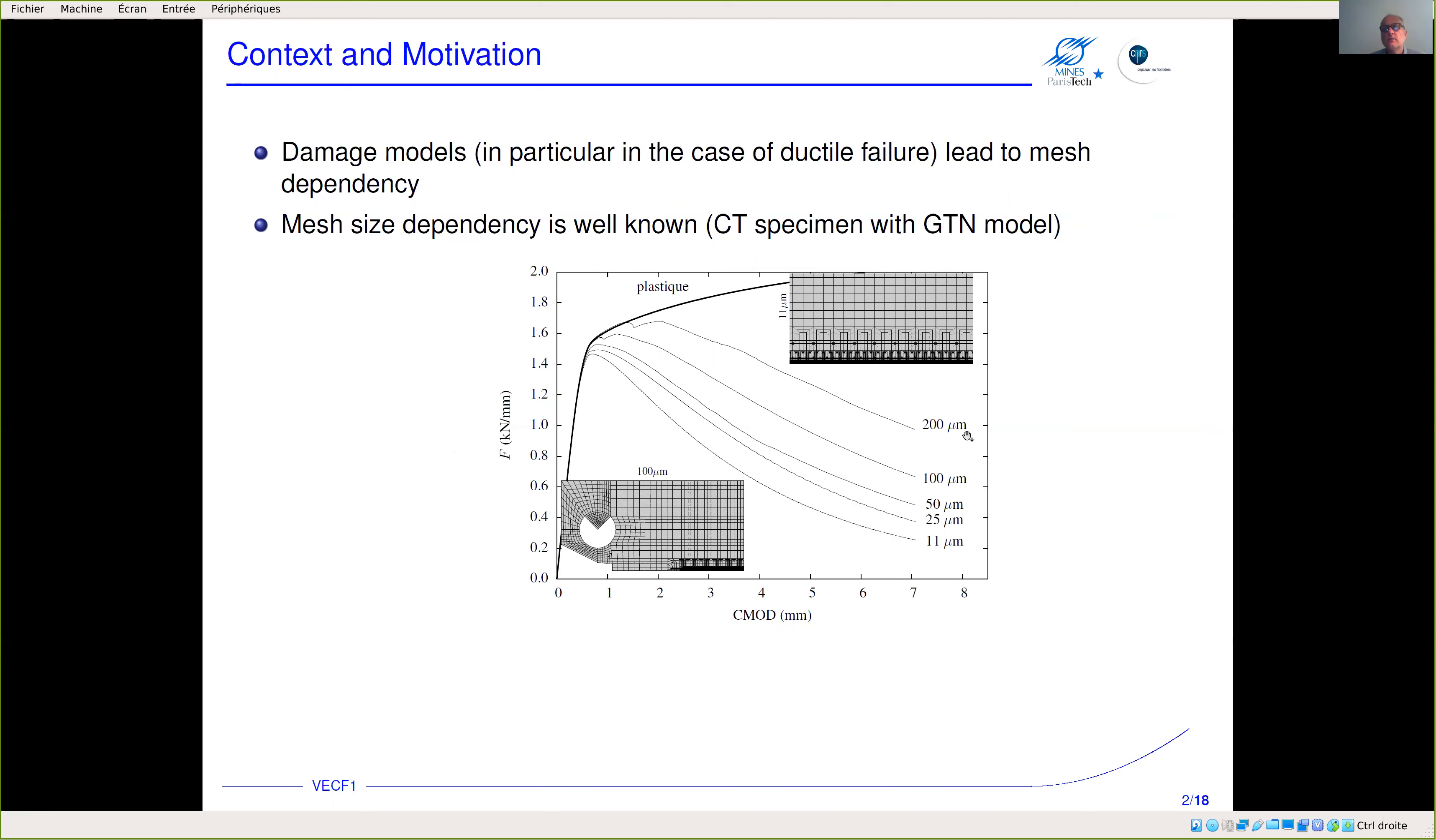Here you have 200, 100, 50, 25, 11 microns. As you know, when we decrease the mesh size we have no convergence, but this problem is well known.